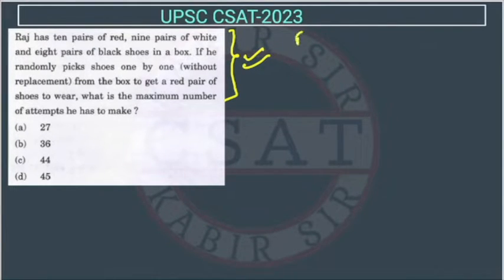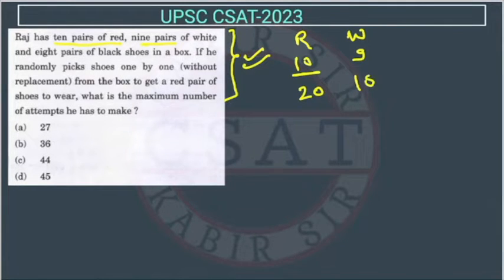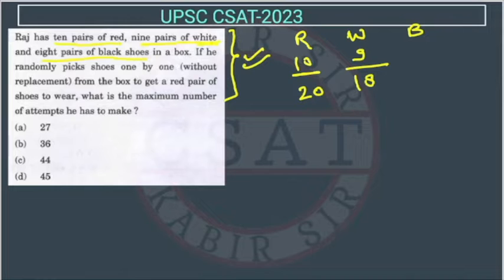So Rad has 10 pairs of red — so that is 20 shoes because these are given in pairs. Now they have given 10 pairs of red, 9 pairs of white — white is 9 pairs, so there will be 18 shoes.